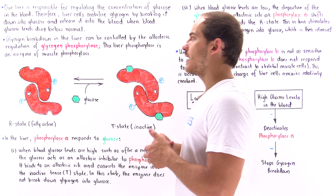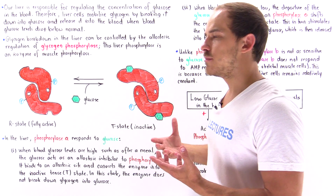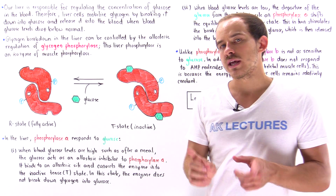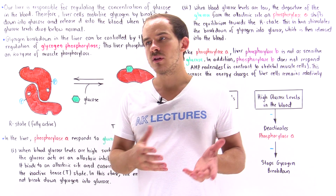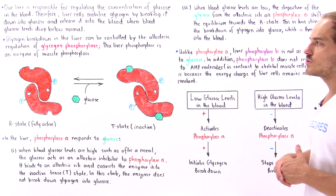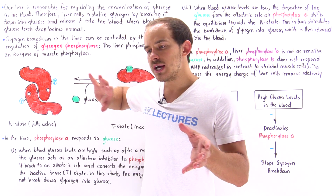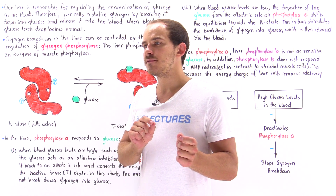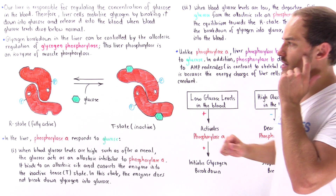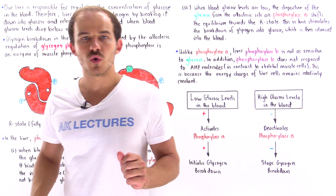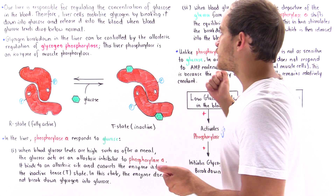In the liver, glycogen breakdown is also regulated by the allosteric enzyme glycogen phosphorylase, but the liver glycogen phosphorylase is slightly different from the phosphorylase found in skeletal muscle cells — it is an isozyme version of the muscle phosphorylase. One important difference is that liver phosphorylase is sensitive to glucose molecules. Glucose is an allosteric effector — more specifically, an allosteric inhibitor of phosphorylase.